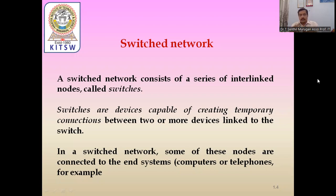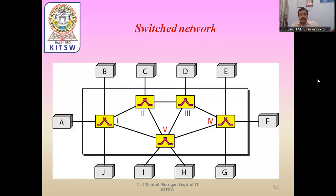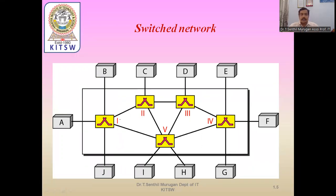In a switch network, some of these nodes are connected to the end systems. Looking at the diagrammatic representation, the yellow colored boxes represent switches — numbered switch one through five. Five switches are used for connecting the systems. The end systems are A, B, C, D, E, F, G, H, I, J. These end systems are connected to their respective switches and the network is framed.